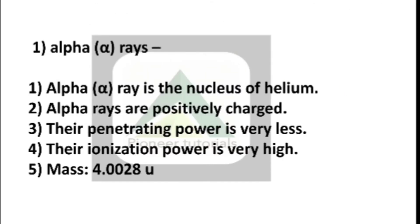Alpha rays: Alpha rays are the nucleus of helium. Alpha rays are positively charged. Their penetrating power is very less. Their ionization power is very high. And the mass is 4.0028 U.